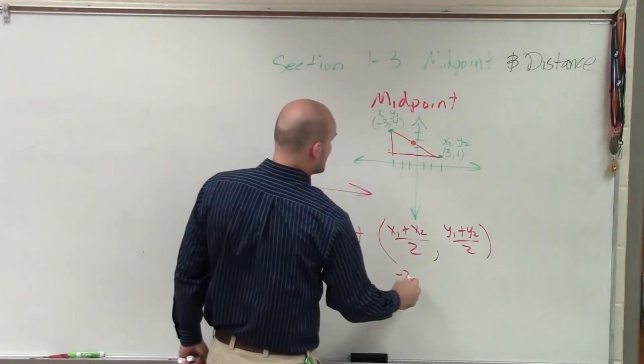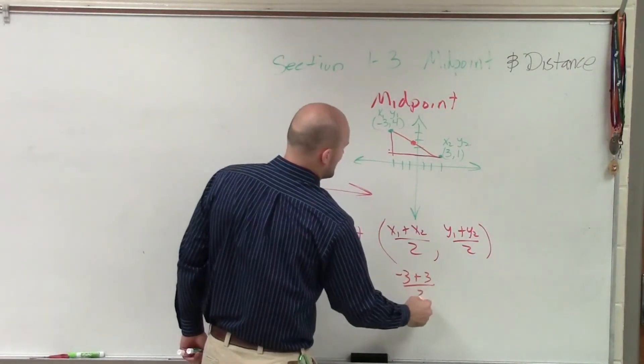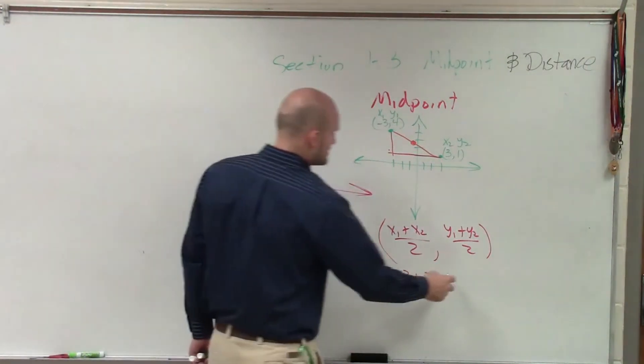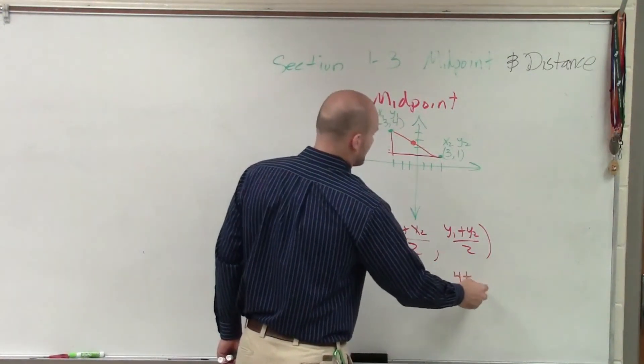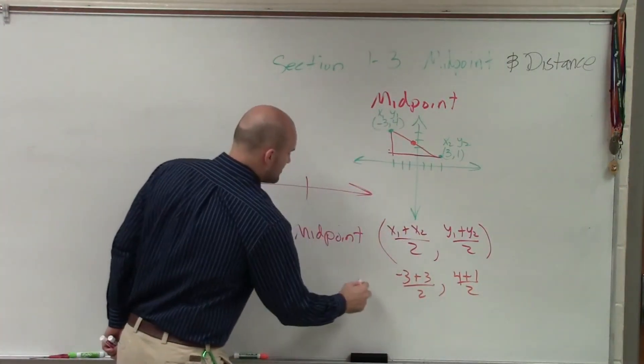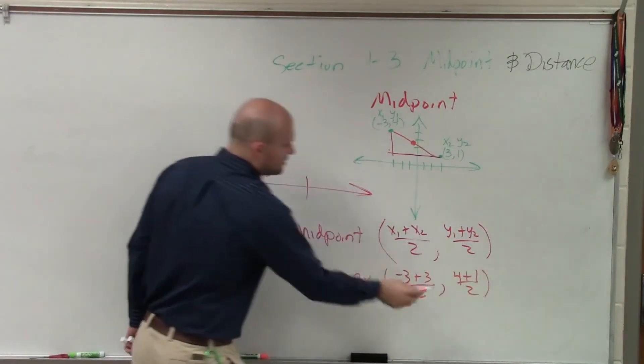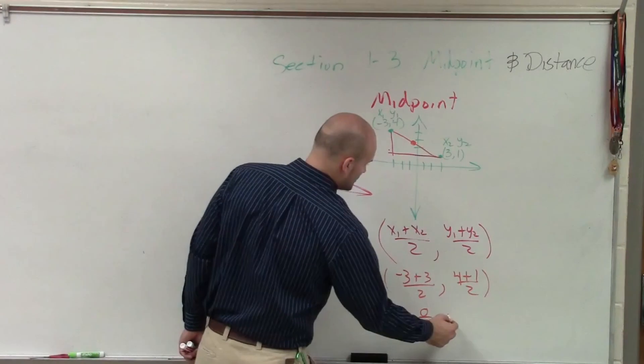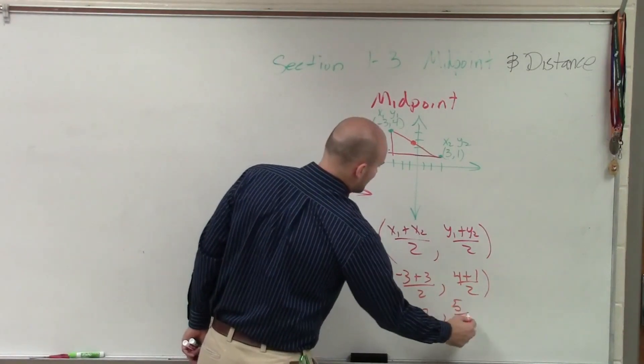So x1 should be negative 3 plus 3 divided by 2, comma, 4 plus 5 divided by 2. I'm sorry, 4 plus 1 divided by 2. So therefore, the midpoint in my example, negative 3 plus 3 is 0. So it would be 0 over 2, comma, 5 halves.